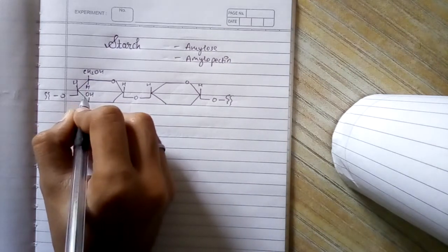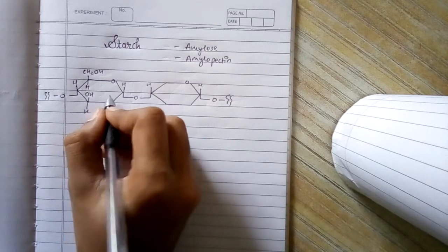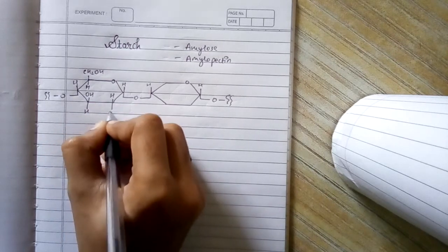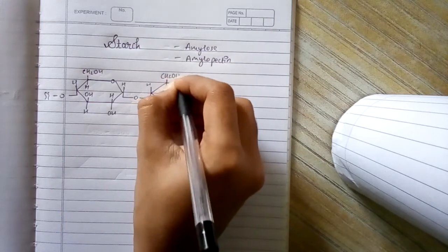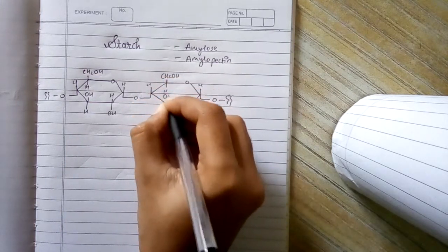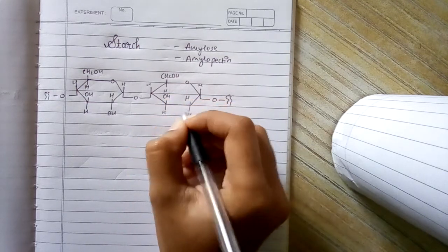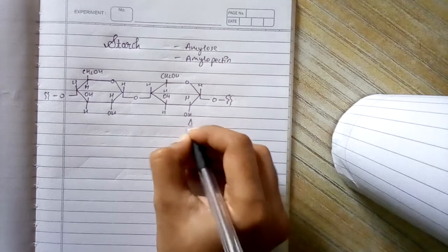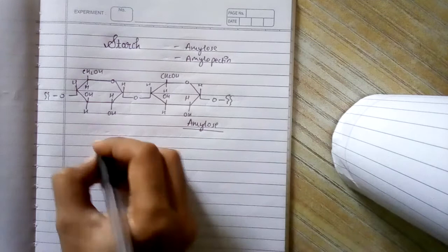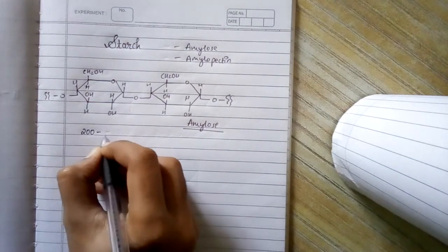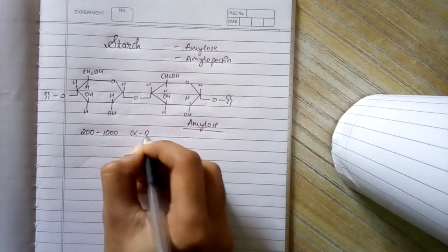Same, we have to fill over here. This is our amylose. Amylose is basically made up of 200 to 1000 alpha D glucose units.